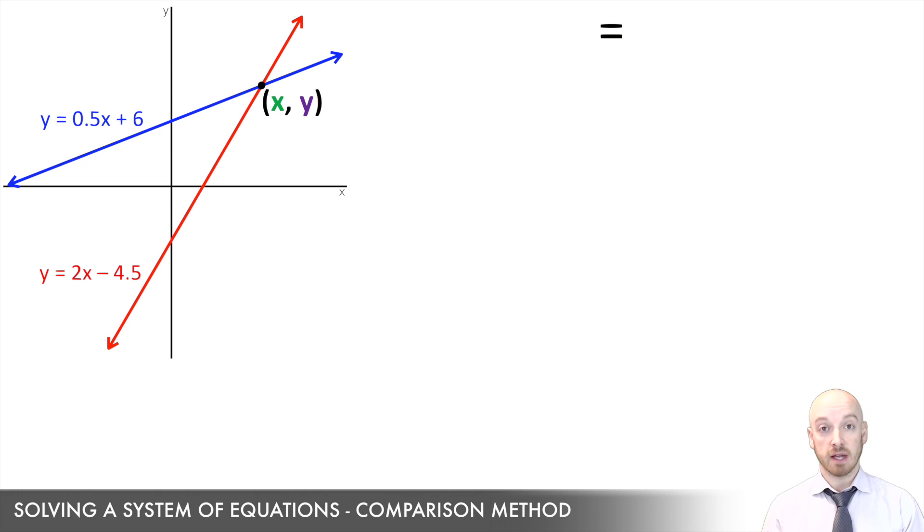And if they have the exact same y values and in one of the equations, y is equal to 2x minus 4.5 and in the other equation, y is equal to 0.5x plus 6, if it's true that the y values in these two equations are equal, which it is at the solution, then I could also say that what's on the right side of the equal sign in these two equations must be equal to each other also.